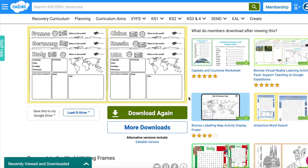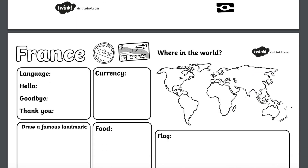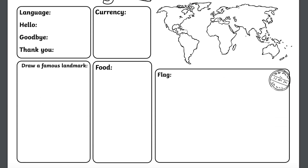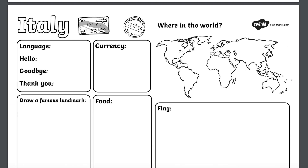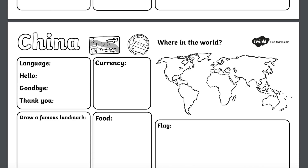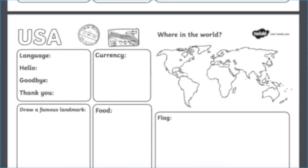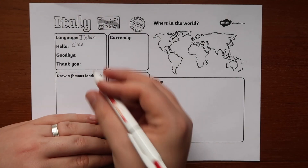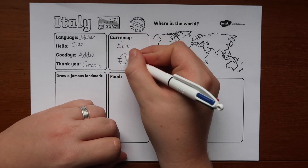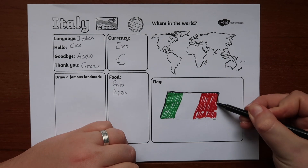Our passports to the world writing frames are a fantastic resource to use when learning about places around the world. Why not use this resource to create a fact file about all the countries around the world, or even to help you further understand the language you're learning by learning about the country itself.